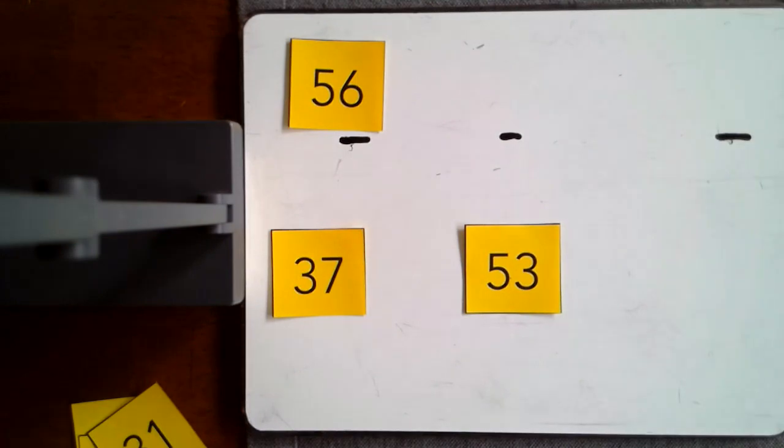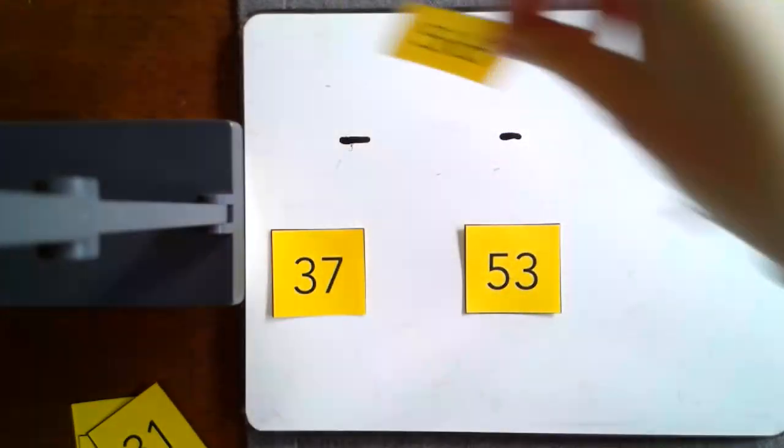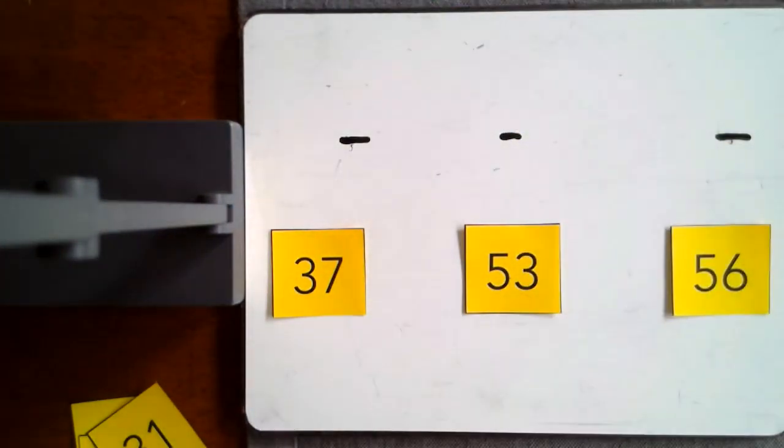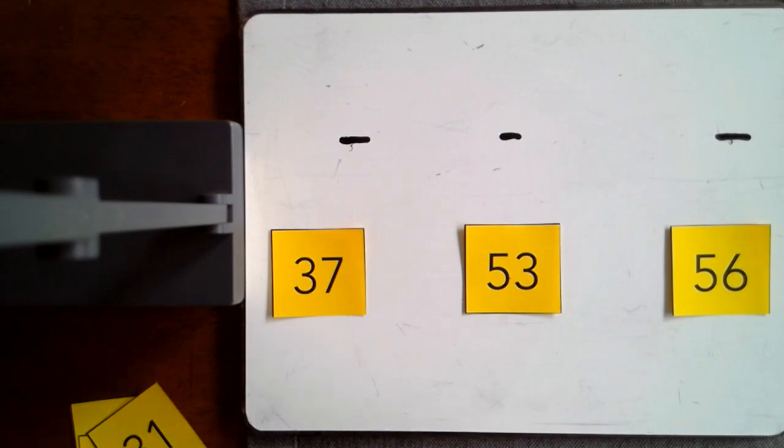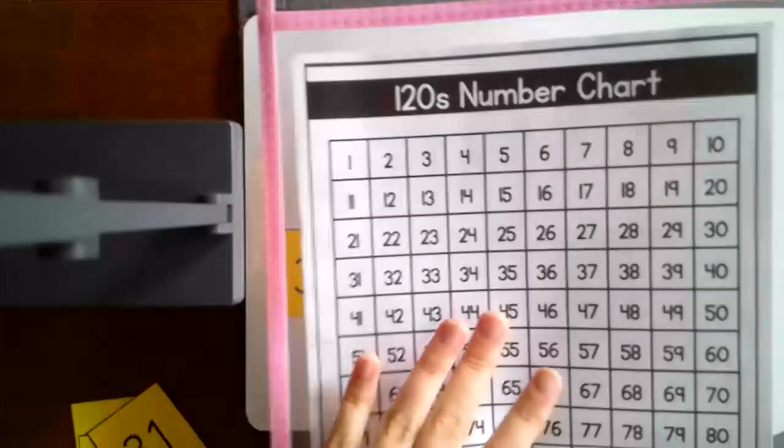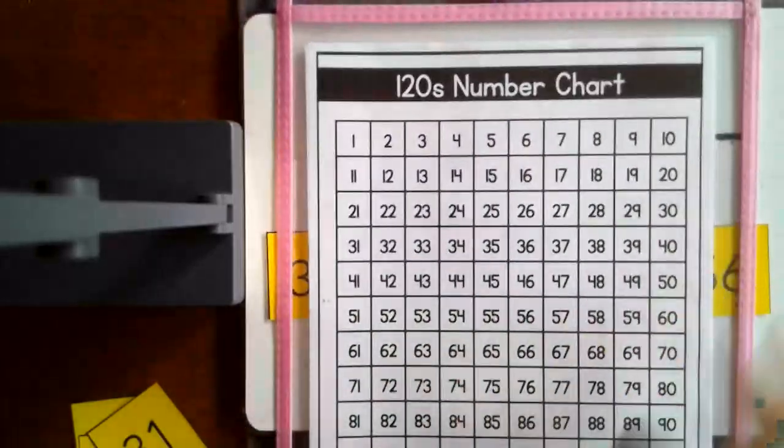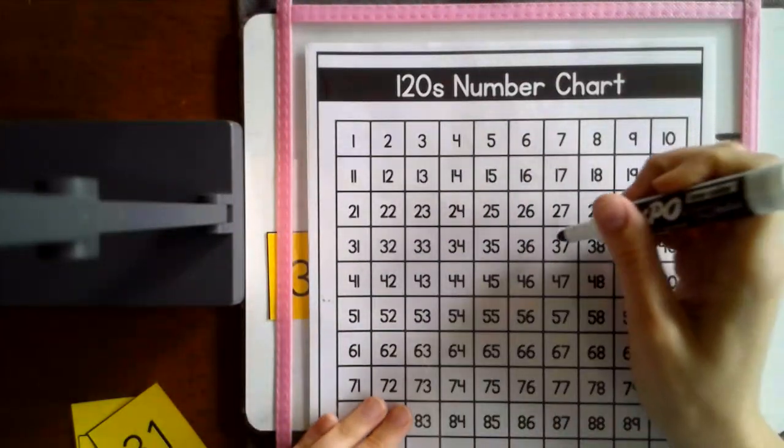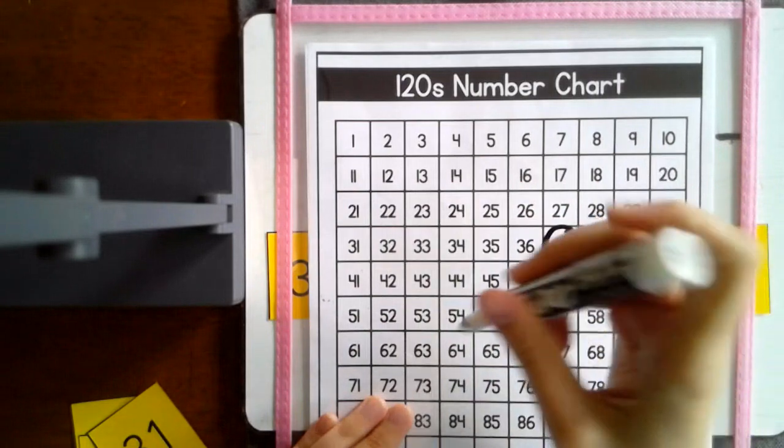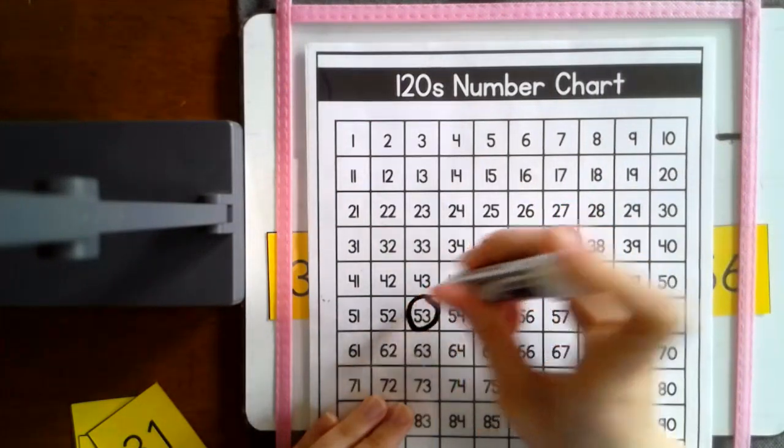Finally, first graders, that means that the one we have left, that 56 is our greatest number. I can check this on my 120s number chart. I'm going to circle the numbers on here and read it left to right again. So we have 37, 53, and 56.